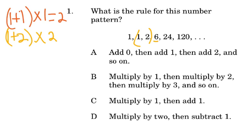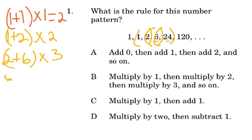Taking the next two: 2 plus 6 times 1 more than 2 gives us 3. So 2 plus 6 is 8, and 3 times 8 is 24. We get that term. Then 6 plus 24 times 1 more than 3 is 4. 6 plus 24 gives us 30, and 30 times 4 gives us 120.